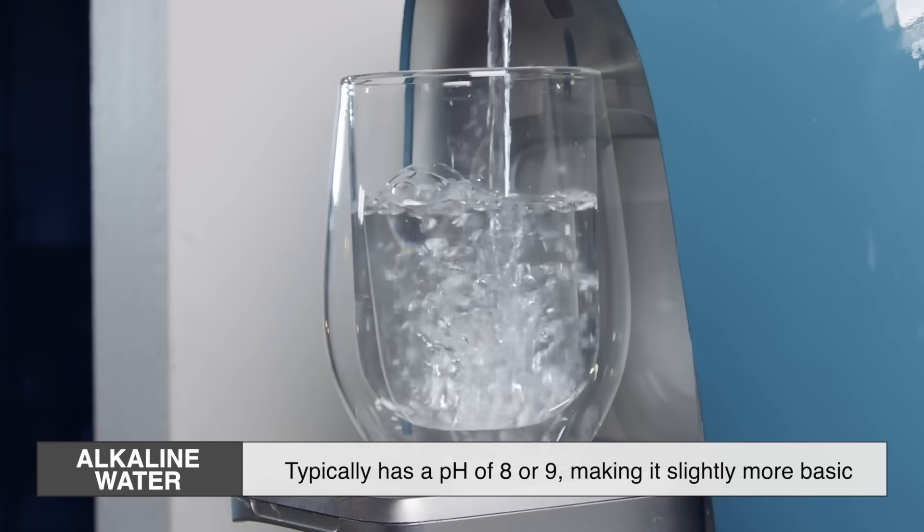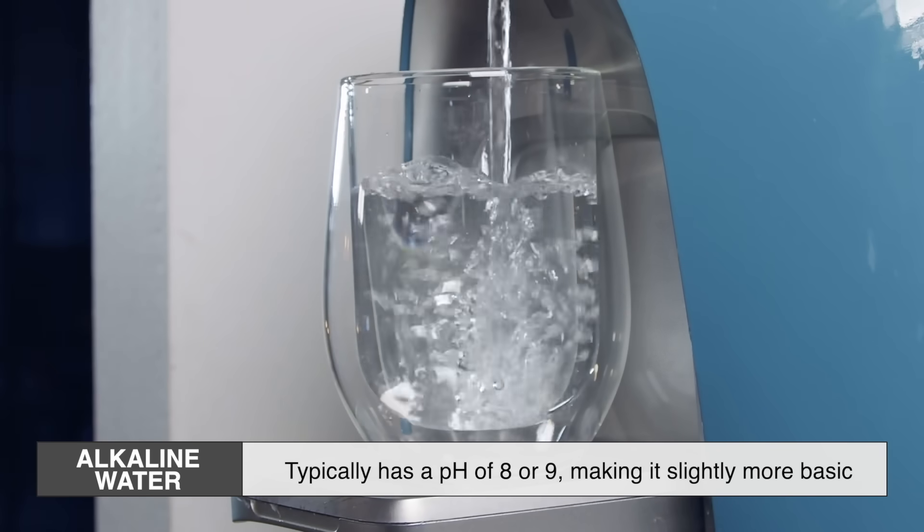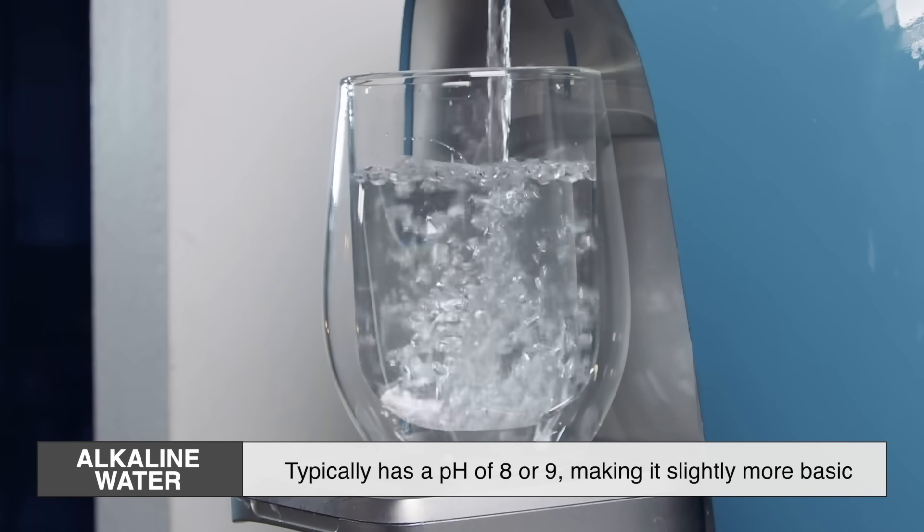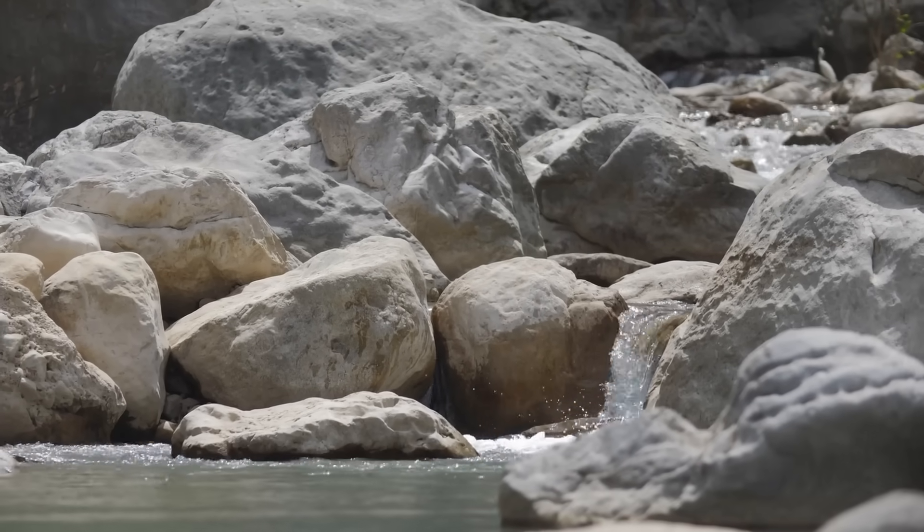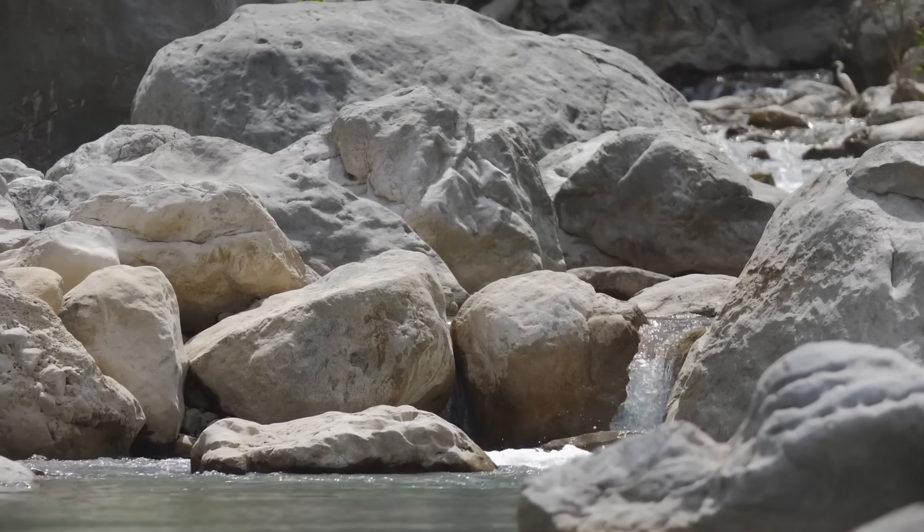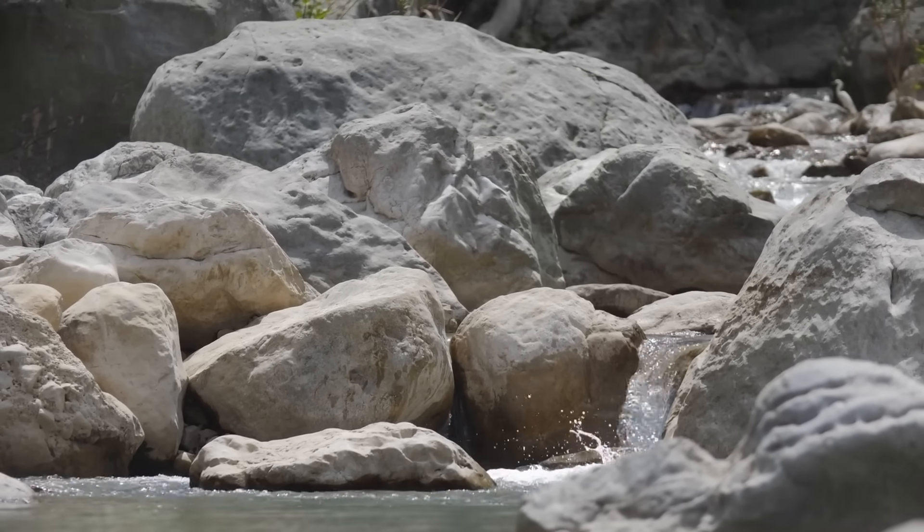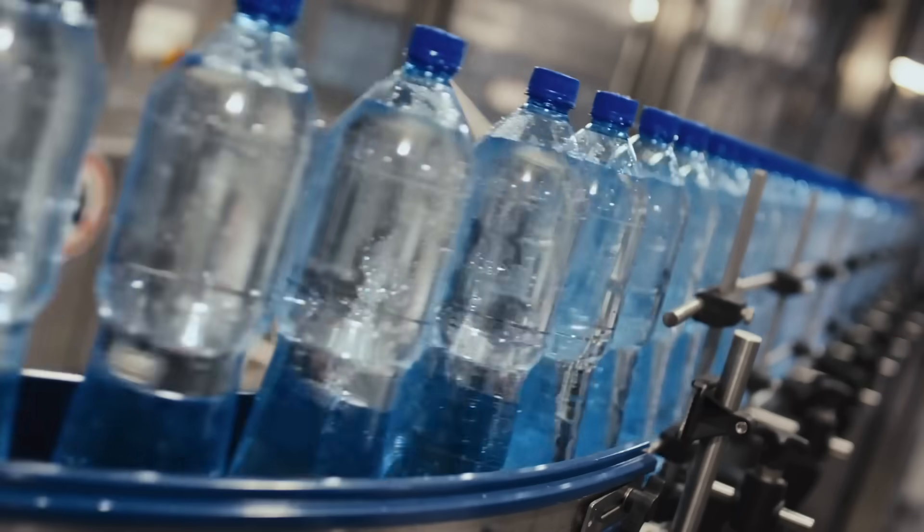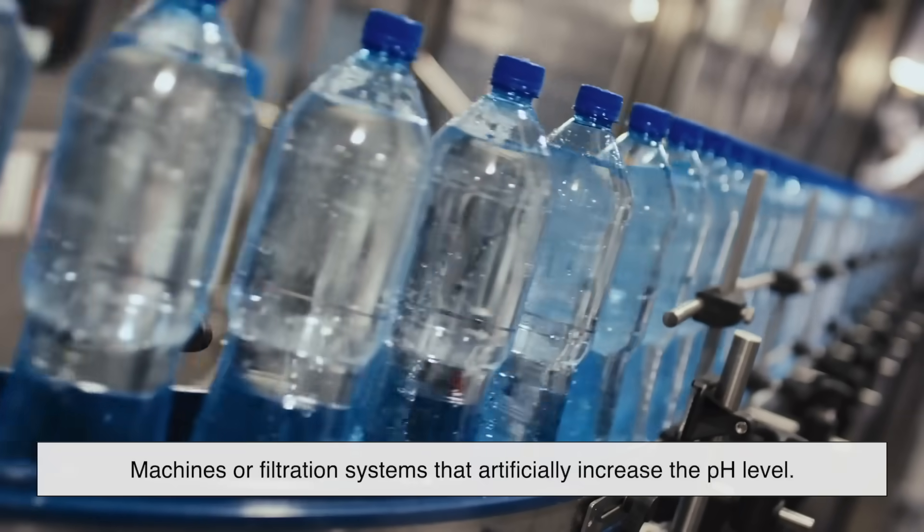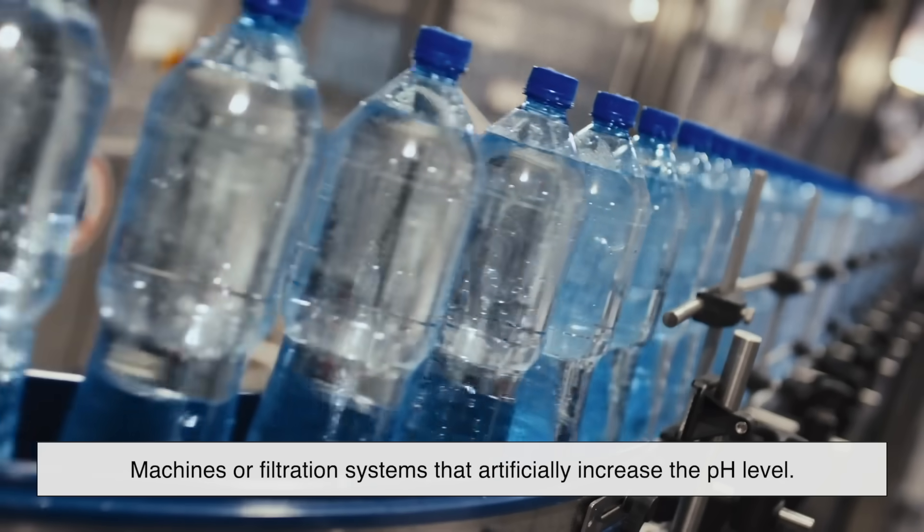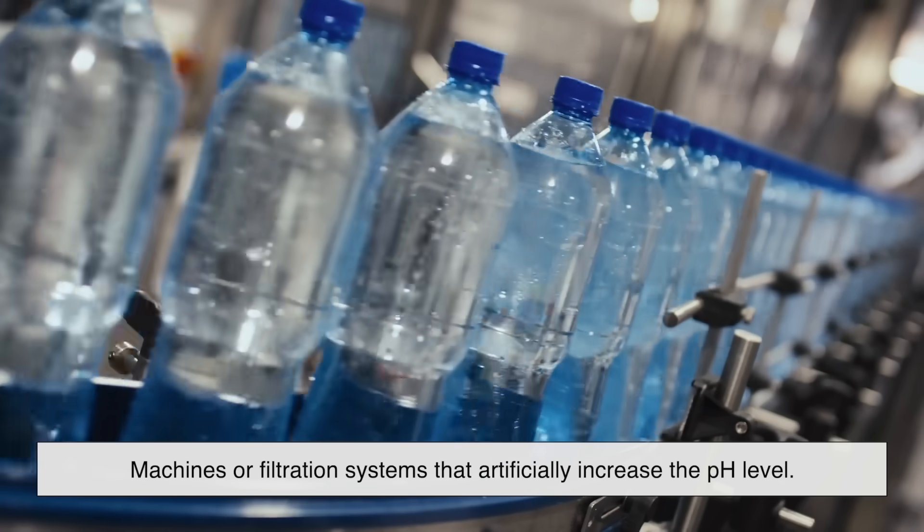Alkaline water typically has a pH of 8 or 9, making it slightly more basic than what normally comes out of your tap. This higher pH can happen naturally, especially when water passes through rocks and picks up minerals. But most bottled alkaline water today is created through machines or filtration systems that artificially increase the pH level.